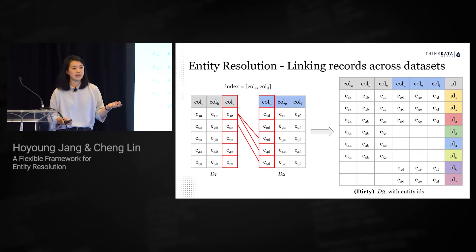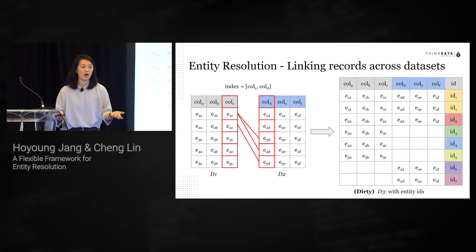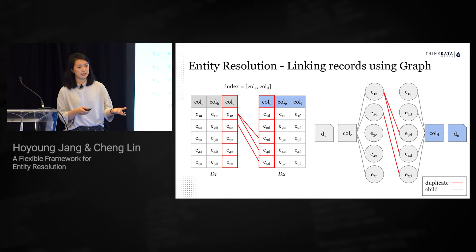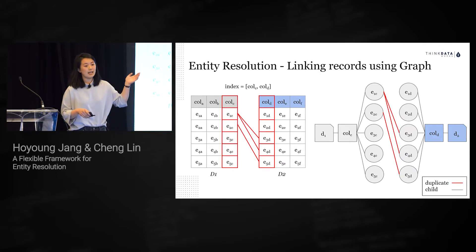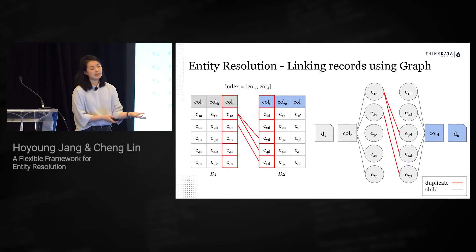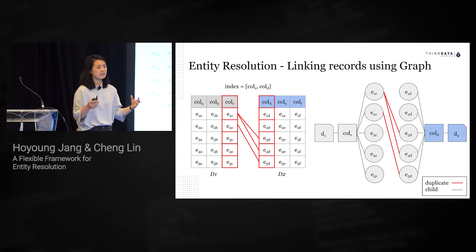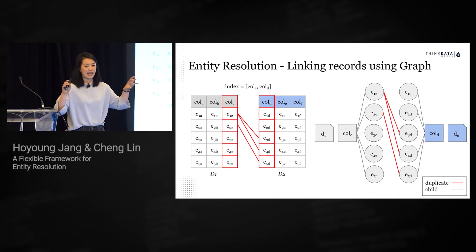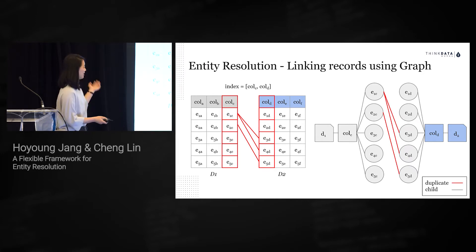However, not all data silos will have the same information for all the same entities, and we might end up with empty fields. A more meaningful representation would use a graph, where every node represents a specific entry and every edge corresponds to a type of relationship. For example, one table has company names and employees, a second table has company names and addresses. Using entity resolution, we can link these and end up with a table showing the address where each individual works — a simplified example of how aggregating different tables yields more meaningful insights.